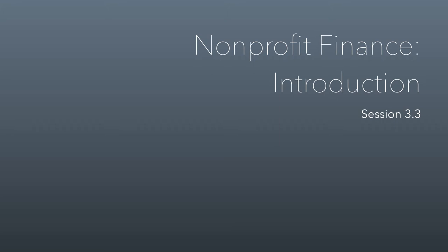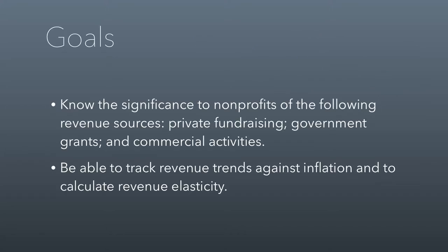Okay everybody, here's session 3.3. This is an introduction to some finance issues for nonprofits to consider. From this class session I want you to know the significance to nonprofits of the following three revenue sources: private fundraising, government grants, and commercial activities. These different revenue sources have attributes that will be important to the way nonprofits operate. I also want you to be able to track revenue trends against inflation and calculate revenue elasticity relative to other things like GDP.